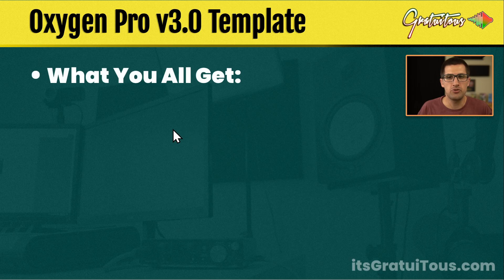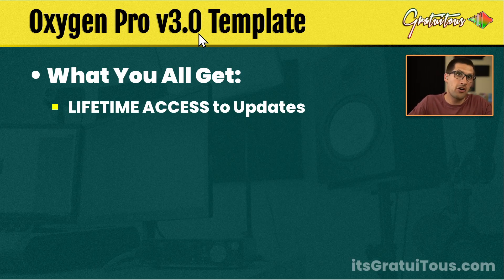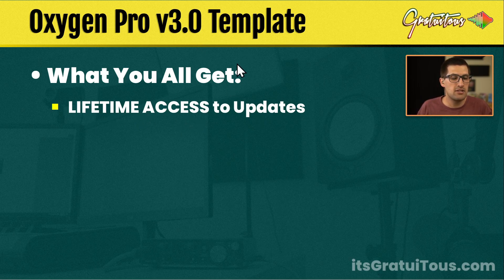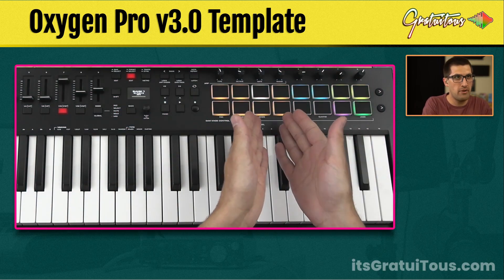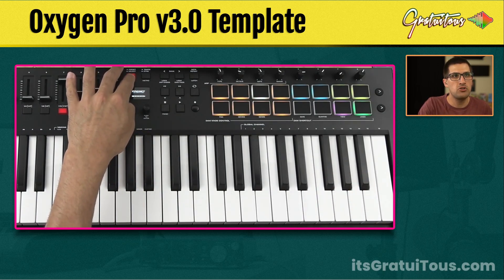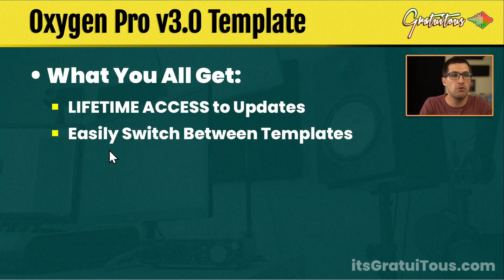To wrap up what you all get: you get lifetime access to the Oxygen Pro updates. Customers who purchased on version 1 keep getting these updates, and I keep you updated through the email list. You can also easily switch between version 1 and version 2 at any time — you're not locked in. Even if you stop using the M-Audio Oxygen Pro, you're not locked into this ecosystem. If you have it, you get a really cool experience. Version 1 is not being actively improved, but if you find a bug, I'll fix it — it seems rock solid.